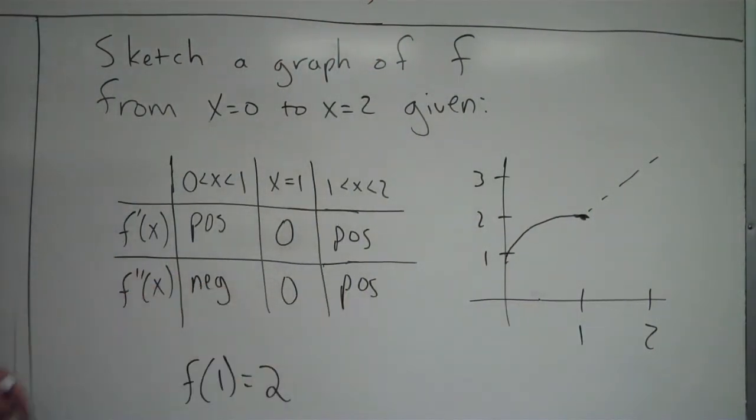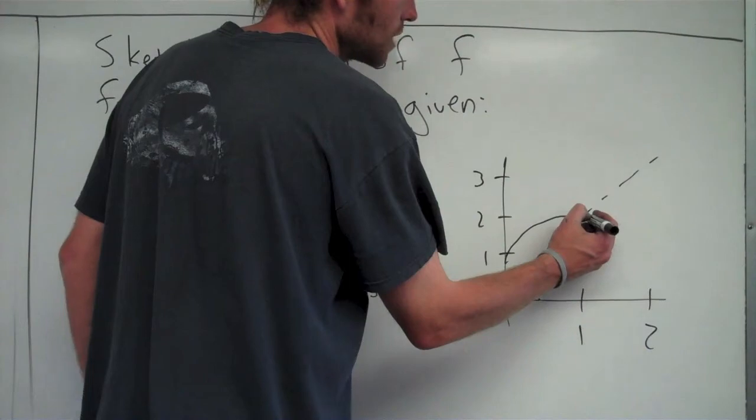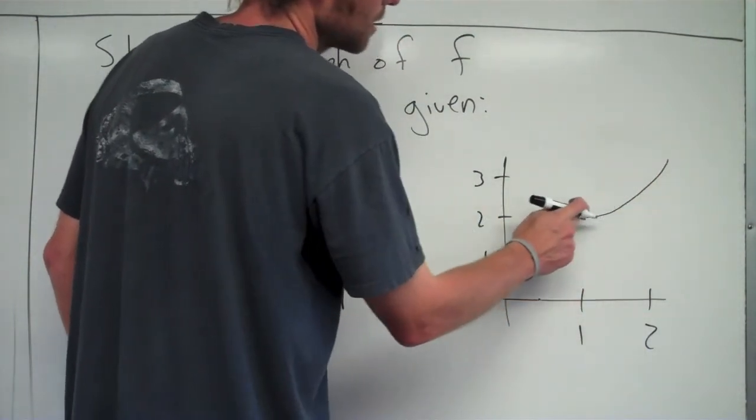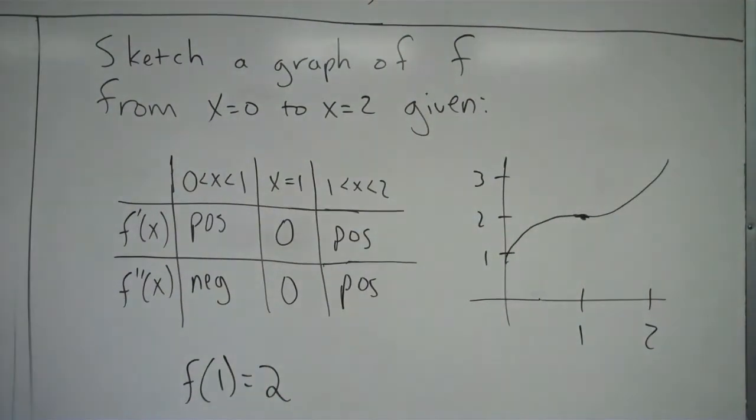Then I notice that f double prime is positive from x equals 1 to x equals 2. So my graph continues to increase, but now it changes concavity and is a positive concavity. All right, so there's what it looks like.